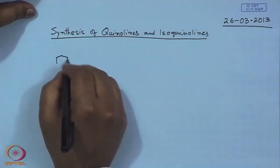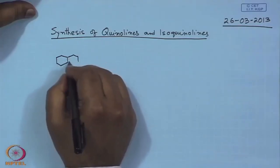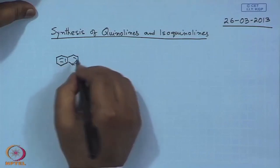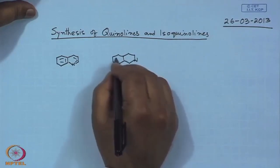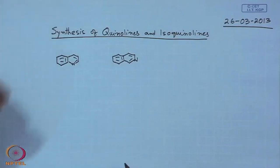Good morning. Today's lecture will cover the synthesis of quinolines and isoquinolines. Quinolines and isoquinolines belong to the fused heterocycles in which one of the rings is benzene and the other is pyridine. In quinolines, nitrogen occupies position one, and in isoquinolines, nitrogen is at position number two.